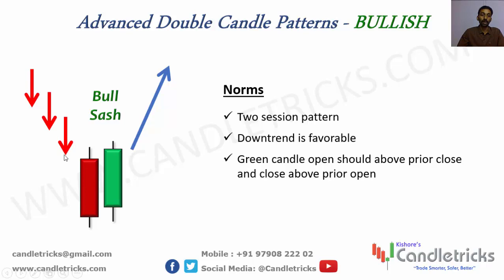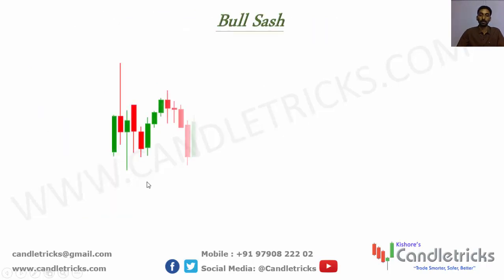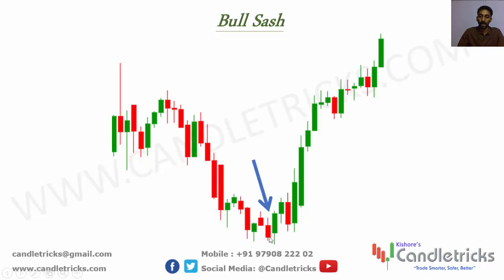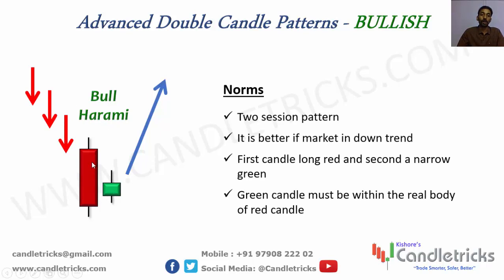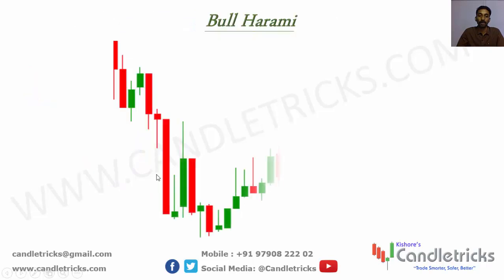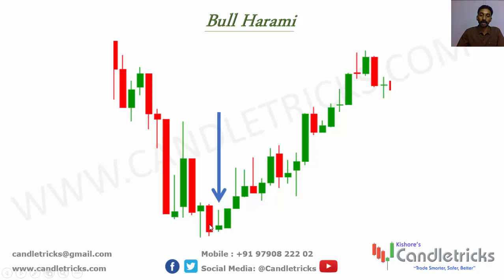Next formation is bull sash. The bullish candle opens above the previous candle's close and closes above the previous candle's open. After a downward movement, this is a clear indication for price reversal from downward to upward. Example: the green candle opens above the previous close and closes above the previous open — clear price reversal indication. Entry is above this candle's high, and price goes to higher levels. Next is bull harami: after downward movement, first candle is a long bearish candle, second candle is a small-range bullish candle, and the small candle's body must be inside the first candle's body — clear indication for price reversal upward.